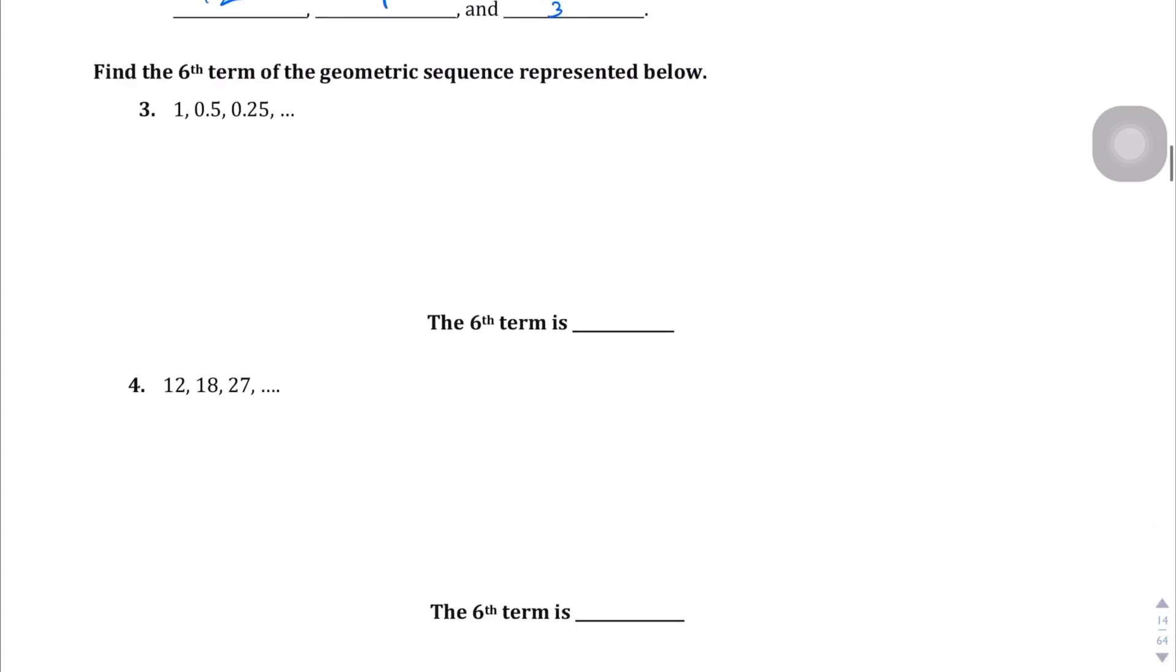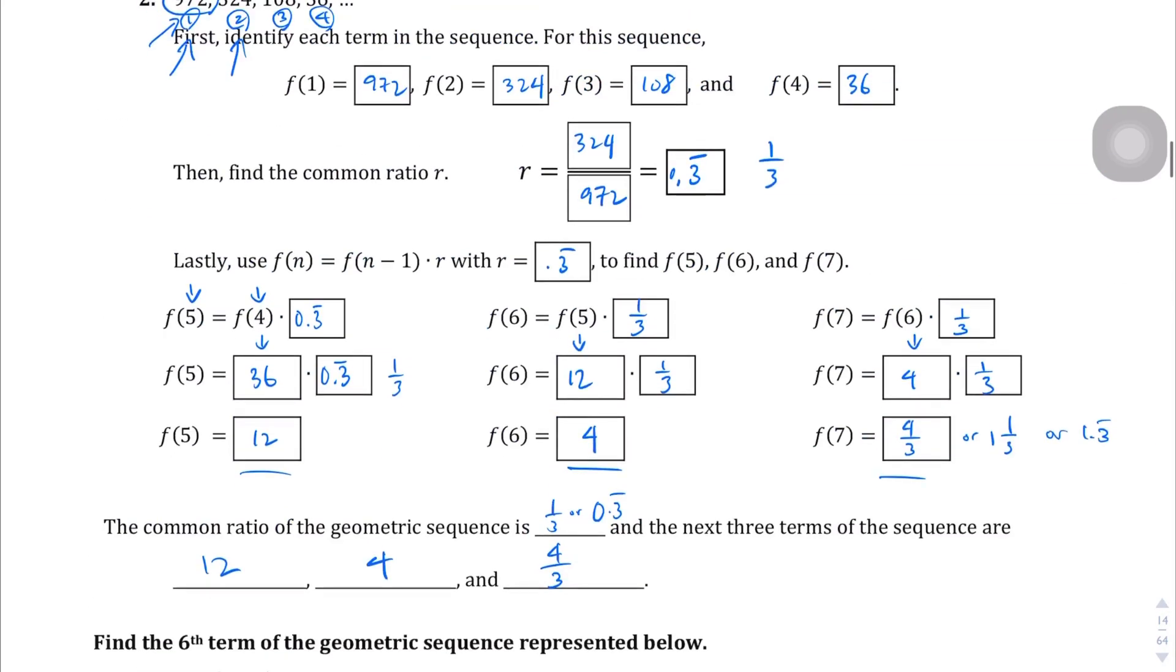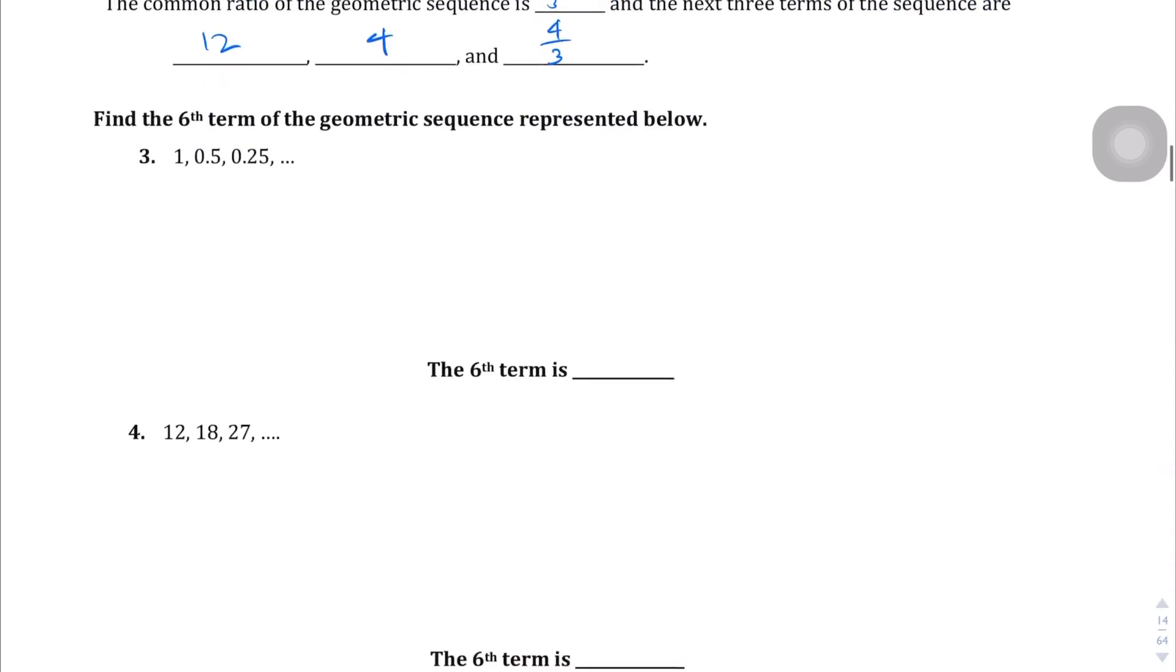Question number 3. We're going to do the same thing except we don't have this nice scaffolding here. So you can go ahead and copy over the scaffolding if you want. So let's take a look here. We're going to identify the first three terms. The first term or f of 1 was 1. f of 2, the second term was 0.5. And f of 3, the third term is 0.25.